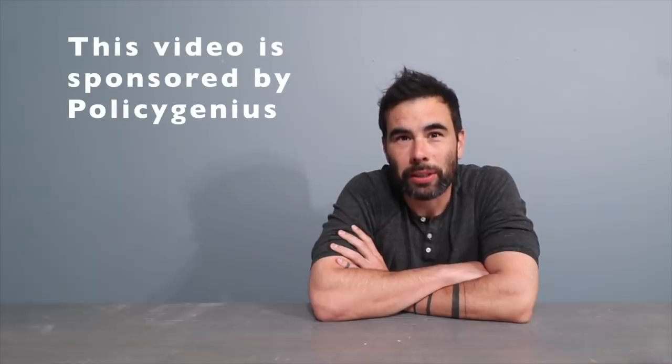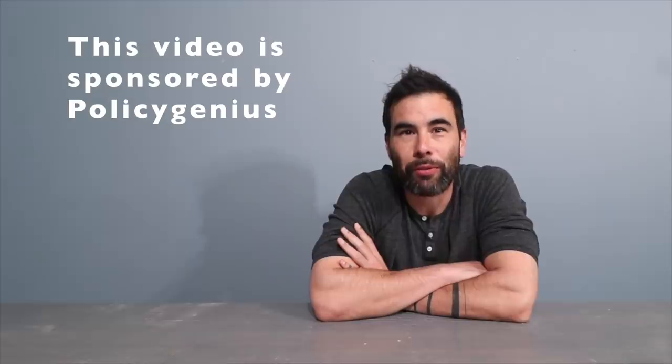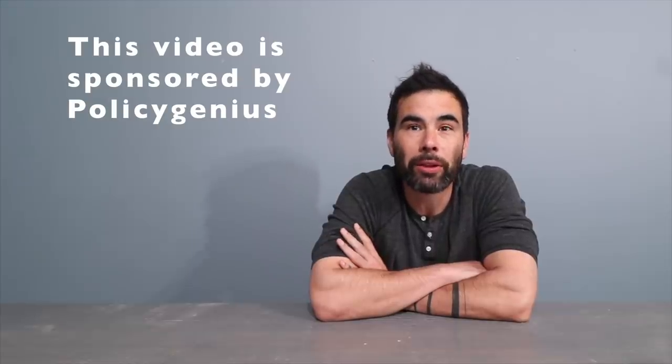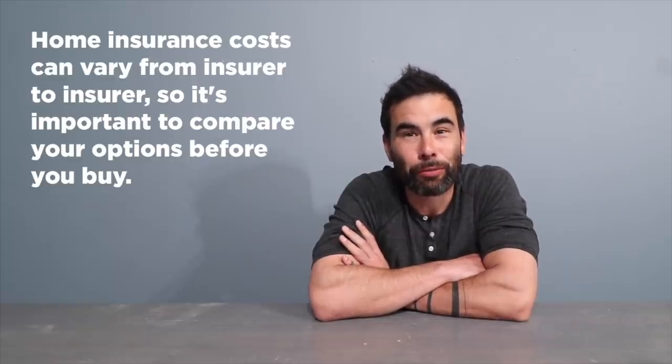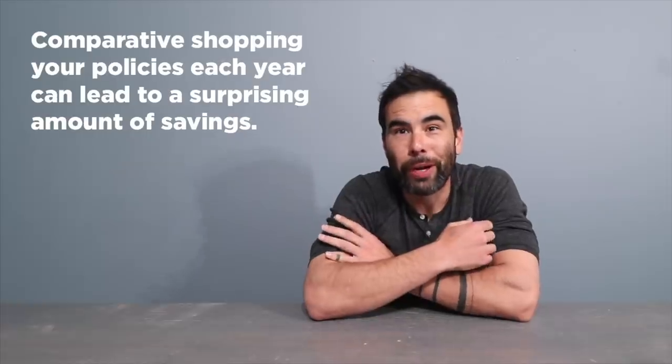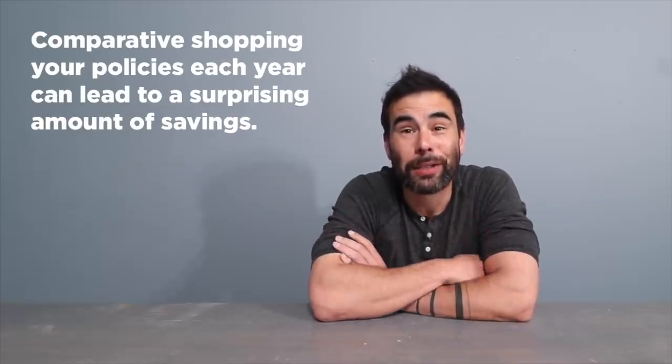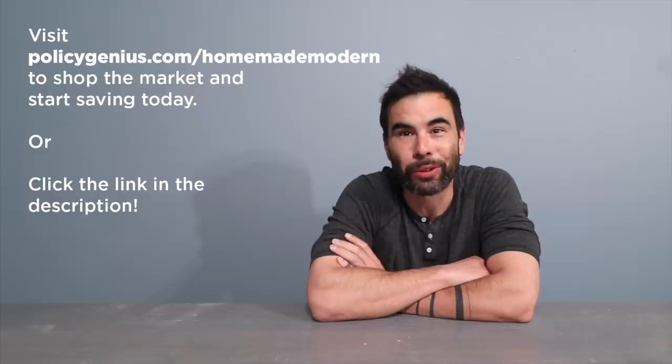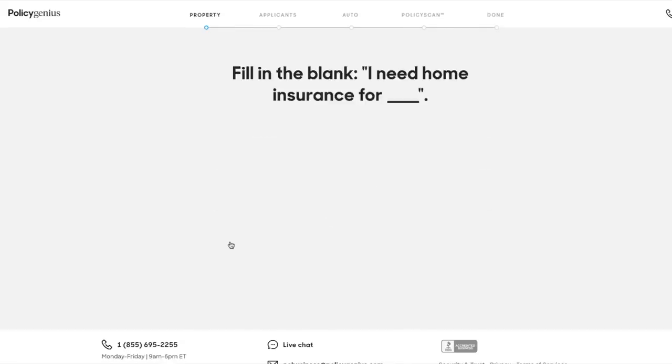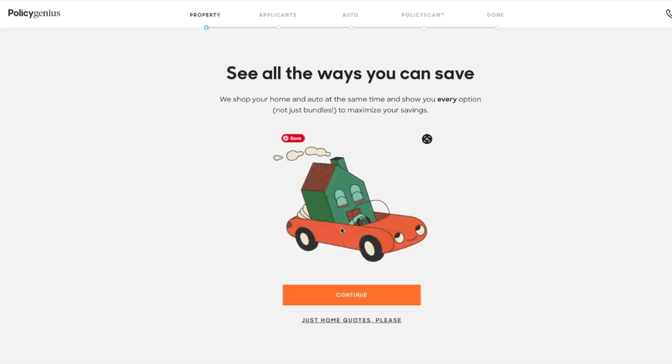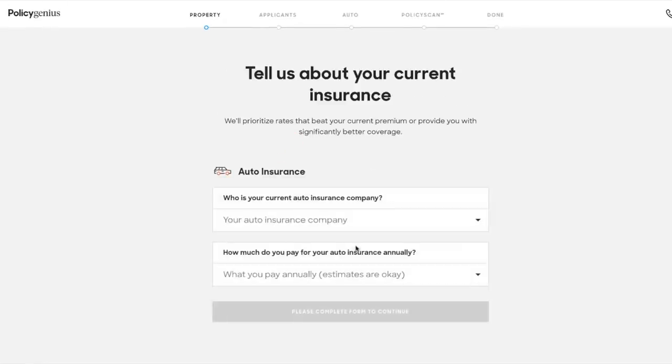This video is sponsored by Policy Genius. Most homeowners who have a mortgage are required by their lender to buy homeowners insurance. Home insurance costs can vary depending on the provider, so it's really important to compare costs. I've learned that comparative shopping your policies can lead to a surprising amount of annual savings. Policy Genius makes this all really easy. You just go online and you answer a few quick questions about yourself and your property, and then Policy Genius can compare your existing policy against others in the market to make sure you're getting the right coverage at the best possible price.